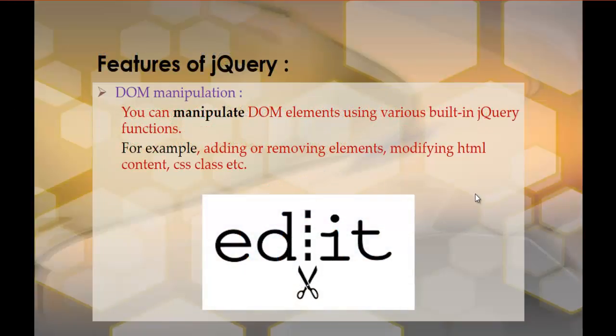Coming to DOM Manipulation: suppose if I want to edit the content in my HTML page, or add or remove elements, or add a CSS class to my HTML element — how can I achieve that? I can achieve that with the help of some built-in jQuery functions. Using those functions I can add or remove an element, modify the HTML content, or add a CSS class to my HTML element. That is the second feature: DOM Manipulation.